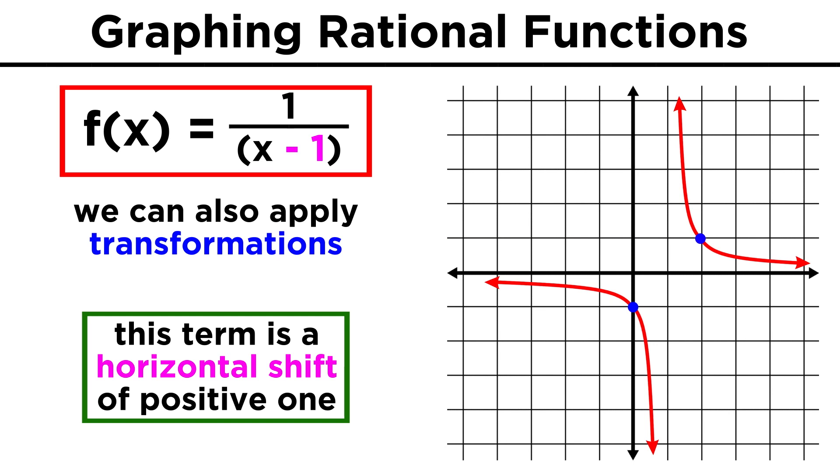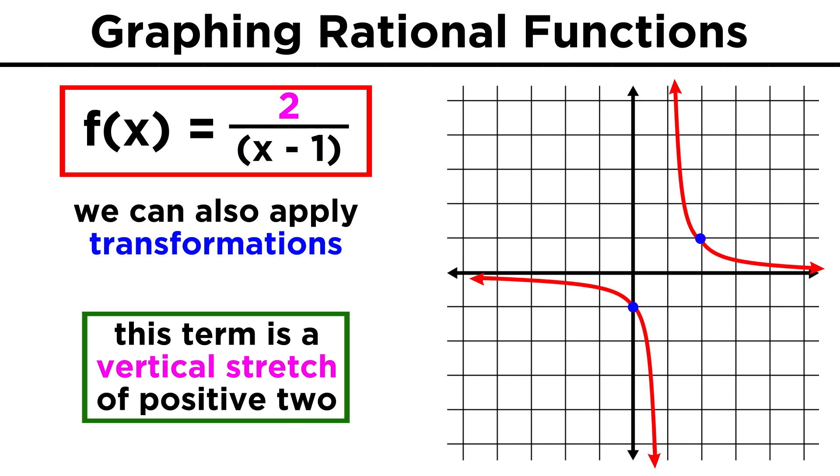If instead we have a number within the denominator, that's a horizontal shift. If this one in the numerator is a two instead, that's a stretch. All the transformations we looked at for parabolas will apply to these, and any other types of functions as well.